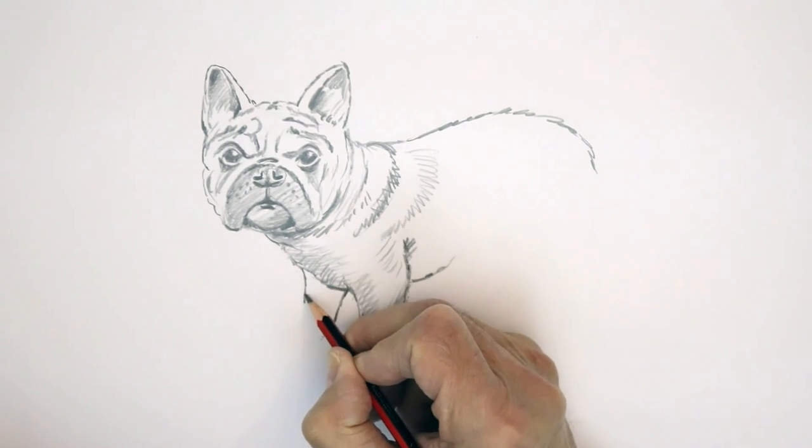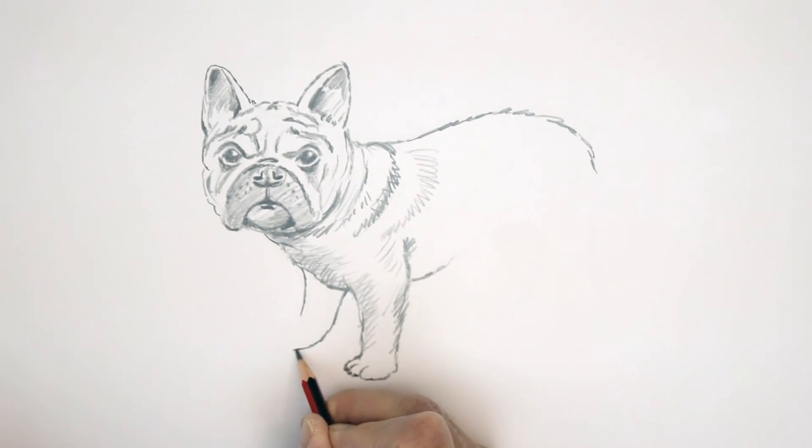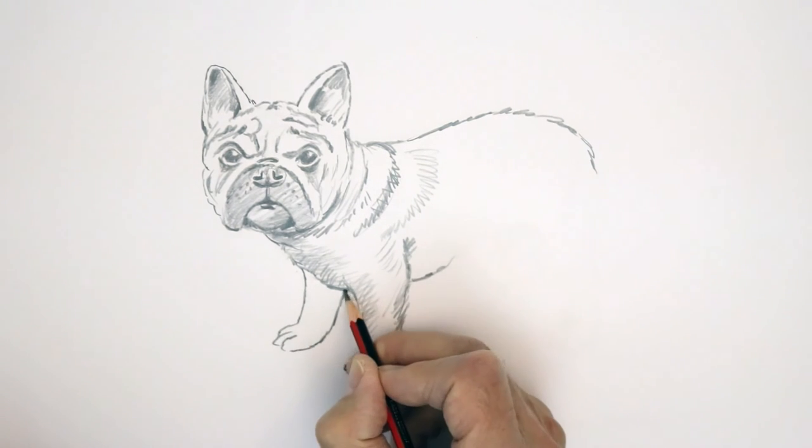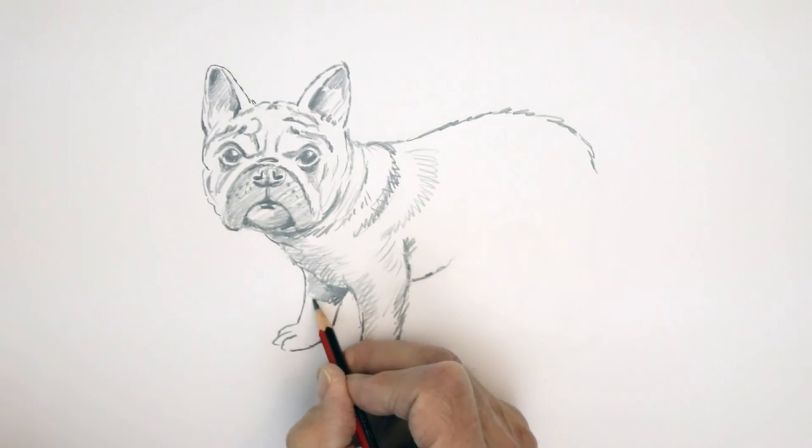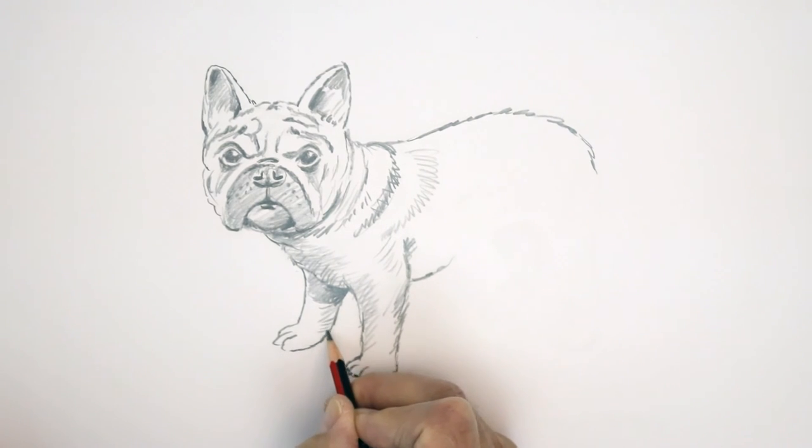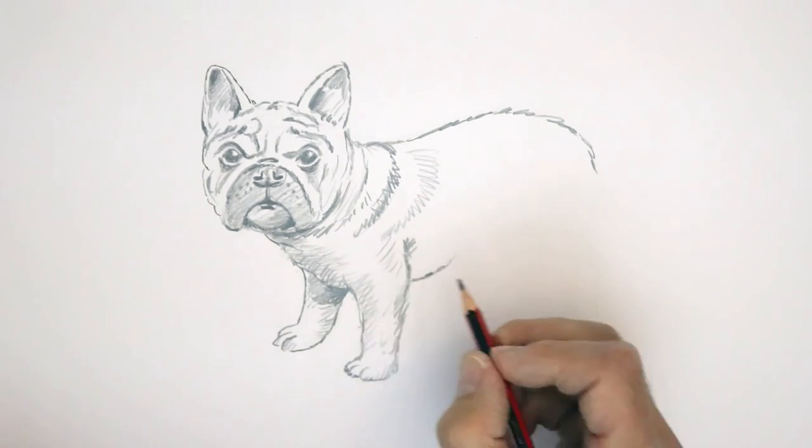This one is sort of further away here, spread out, so probably come in about there, see? And again, a bit of weight on your pencil here as it's shadowed. Like that.